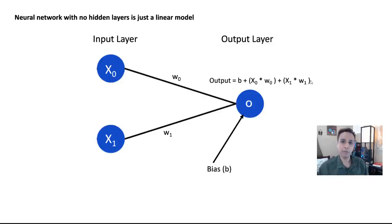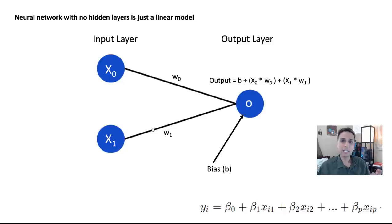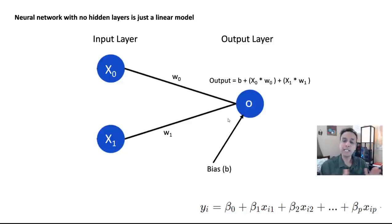So for now let's not worry about activation because it's just linear. This equation looks exactly like the linear equation we just saw. The point is: with no hidden layers, your neural network is basically a linear equation — it's like doing linear regression. So if your problem can be solved using linear fitting, you do not need any hidden layers.